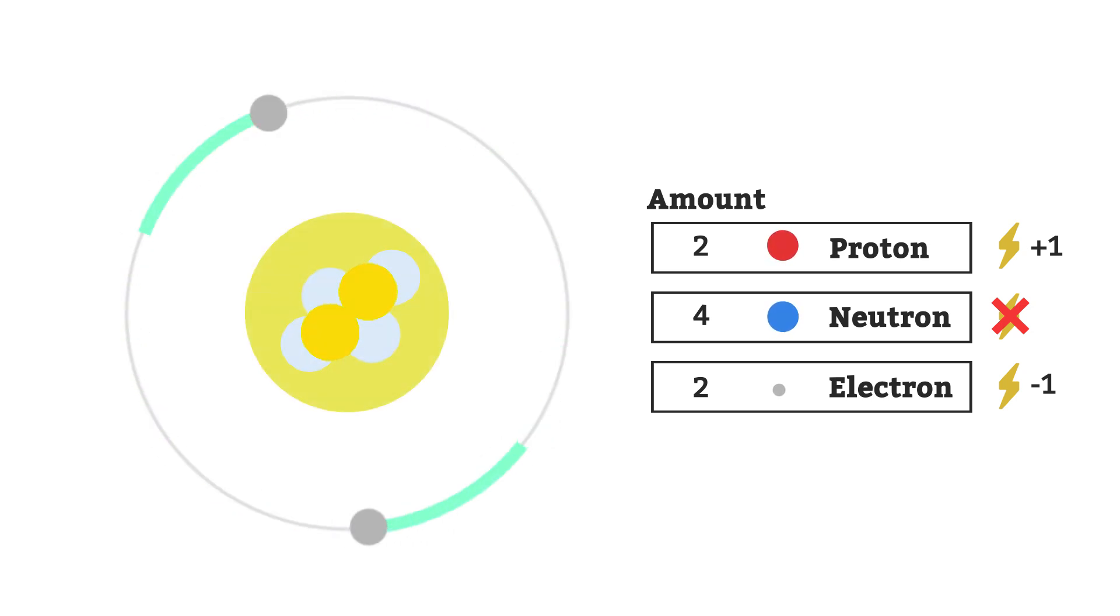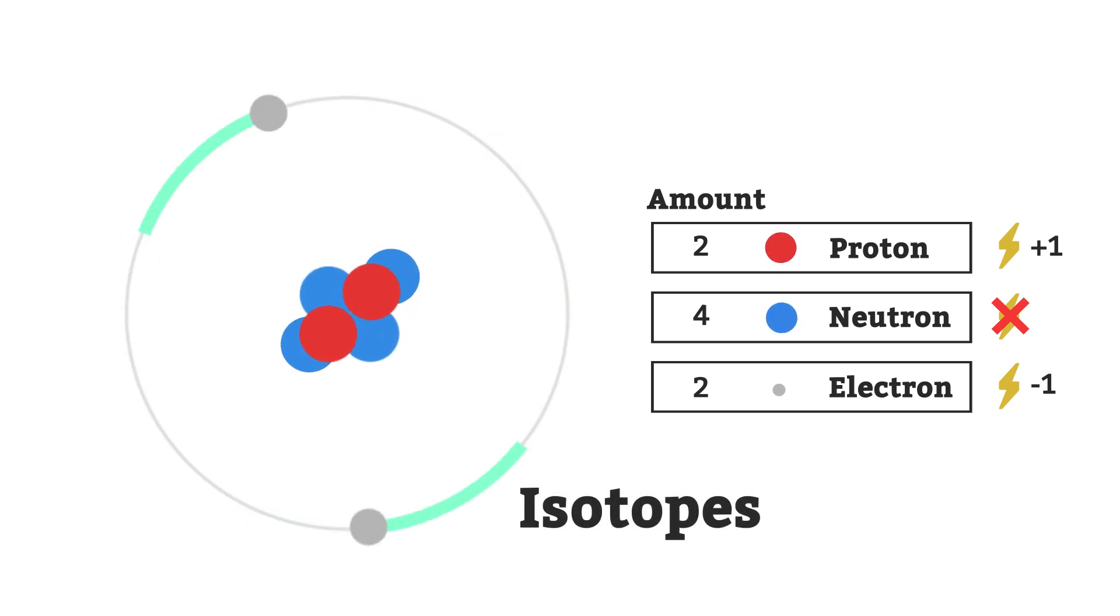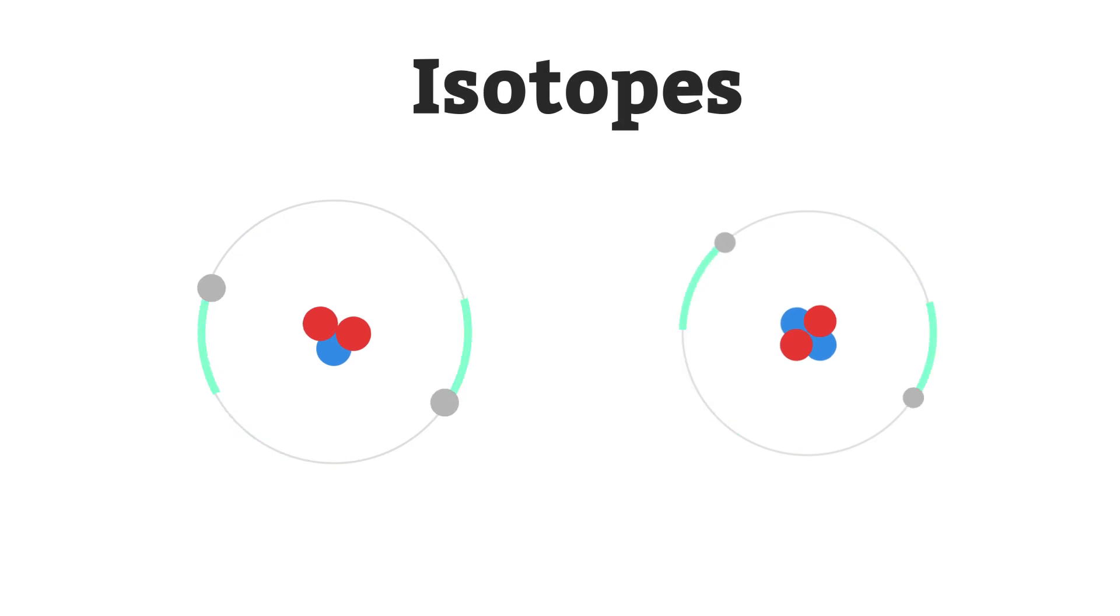Some atoms have more or fewer neutrons in the nucleus than other atoms of the same element. These are known as isotopes. They have different masses, but undergo the same reactions and have the same physical properties as each other. In fact, their mass is the only way in which they are different.